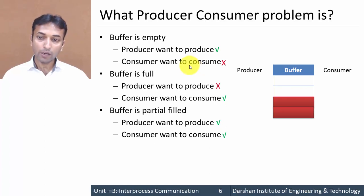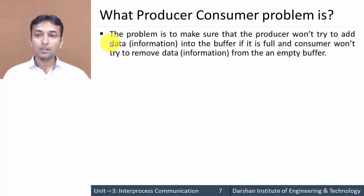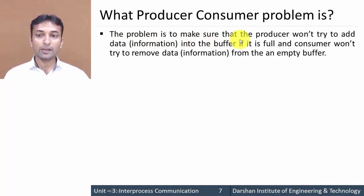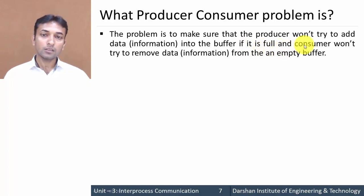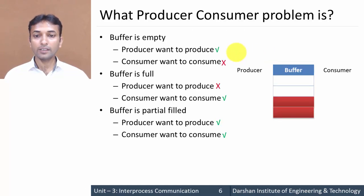The actual producer-consumer problem is this: whenever the buffer is empty, the consumer cannot consume any item, and whenever the buffer is full, the producer cannot produce any item. The problem is to make sure that the producer won't try to add data into the buffer if it is full, and the consumer won't try to remove data from the buffer when it is empty.